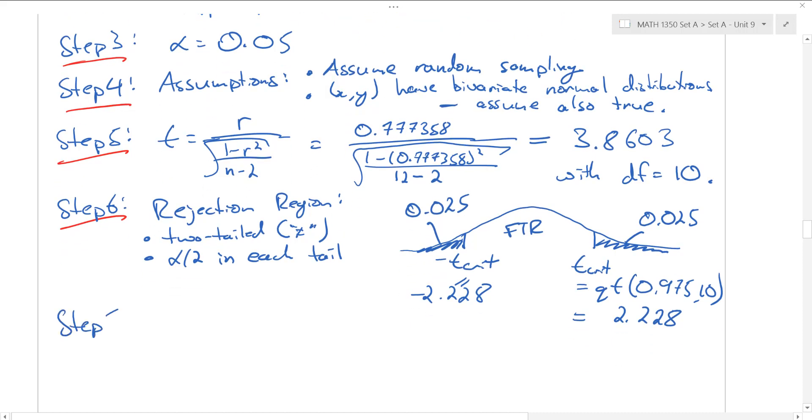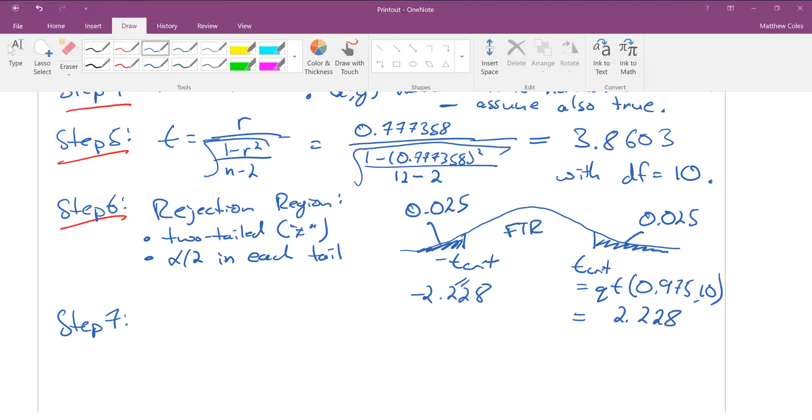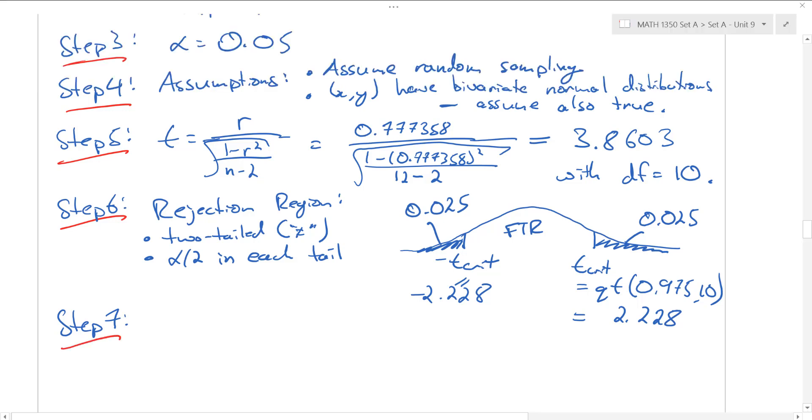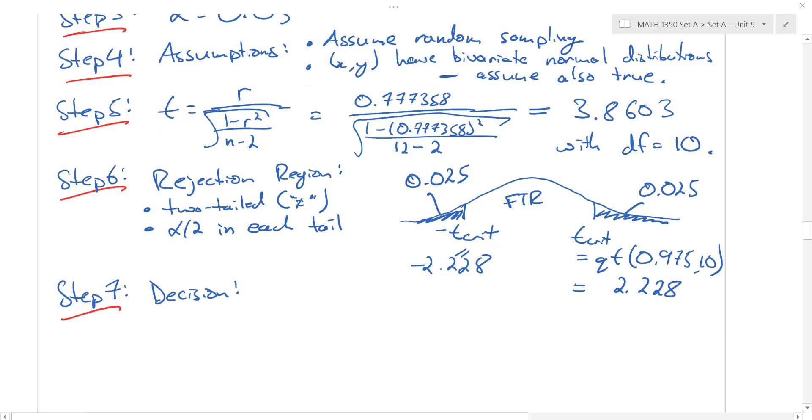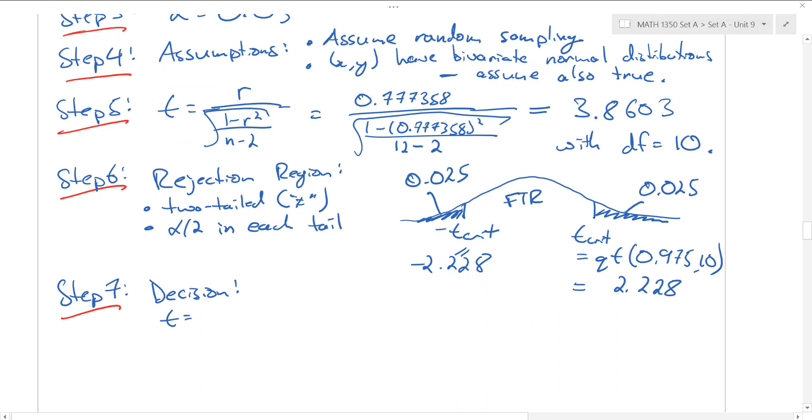Okay, with the rejection region established, we can go ahead and make some kind of decision in step 7. Let's decide how this is going to go. The t value we computed, this 3.8603, this is bigger than 2.2 over here. This is in the rejection region. And so let's reject the null hypothesis.